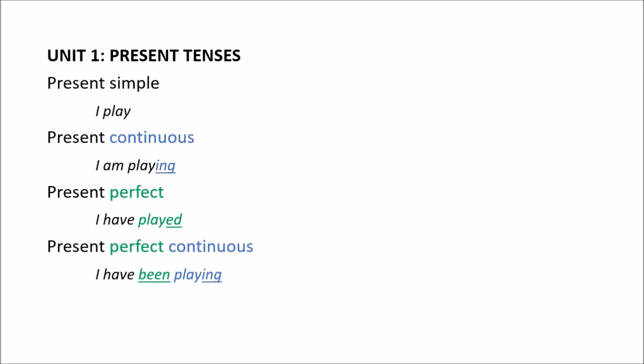The present simple — 'I play' — simply means it has one word in the positive form. You have the present continuous — 'I am playing' — continuous tenses you can always recognize by the -ing form at the end. You also have the present perfect — 'I have played' — where you recognize the verb 'to have' and the past participle. And you could also combine the two: a present perfect continuous, which has 'playing' as a continuous and 'been' which is the past participle of 'to be'.